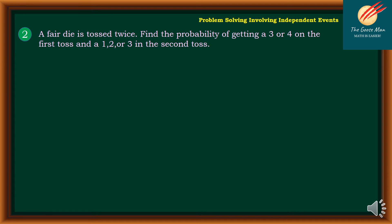Problem number 2: A pair of dice is tossed twice. Find the probability of getting a 3 or 4 on the first toss and a 1, 2, or 3 on the second toss. The probability of A — getting a 3 or 4 — is 2 out of 6, since there are 6 numbers in all and we want either 3 or 4.